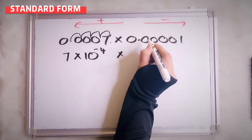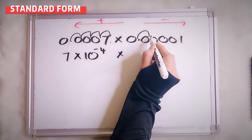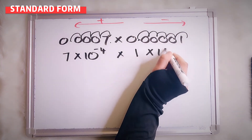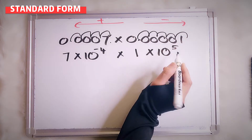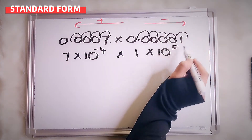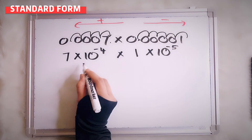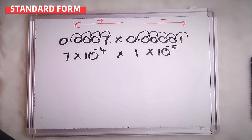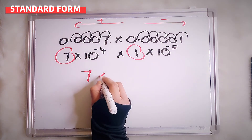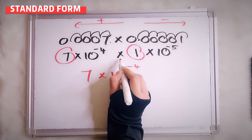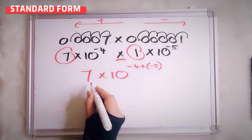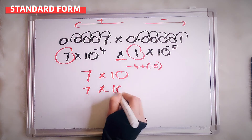For 0.00001, start from the decimal: count 1, 2, 3, 4, 5 — so it's 1 times 10 to the power of 5. We move to the right side, so it's negative. Now 7 times 1 equals 7. Multiply by 10: negative 4 plus negative 5. Since the signs are both negative, that means negative 9.